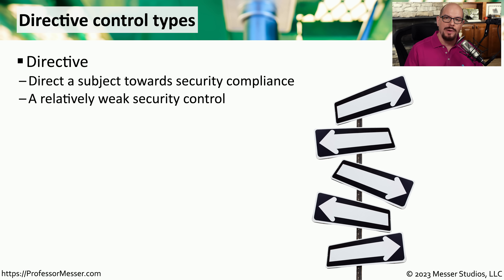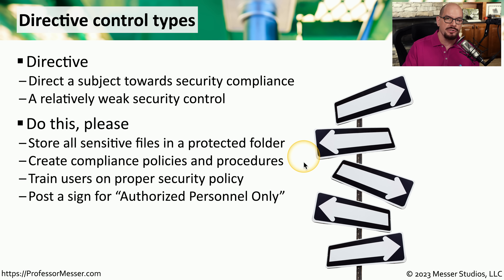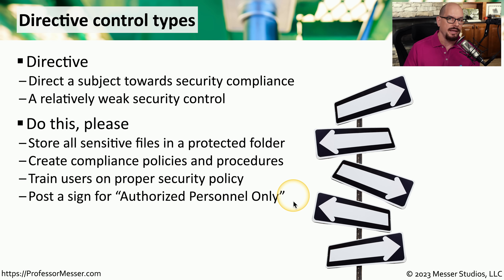The last control type we'll look at is a directive control type. This is a relatively weak security control because it directs someone to do something more secure rather than less secure. For example, you may require everyone to store sensitive information in a protected and encrypted folder on their system. This requires the user to decide what data may be sensitive and what may not, and then they are directed to store the sensitive information in the protected folder. As part of our security policies, we may want to add compliance policies and procedures so everyone understands the proper processes to use for security. You might also train users on what the proper security policies might be. Another example of a directive control may be a sign on a door that says 'authorized personnel only' — there might not be a lock on the door, but the sign directs people to either enter or not enter.